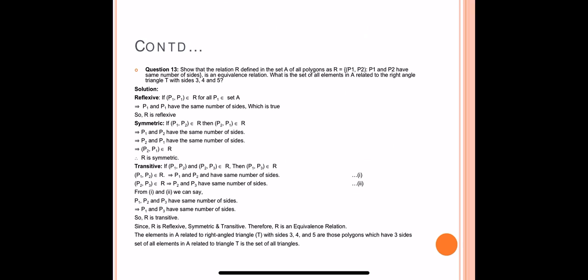For transitive: if (P1, P2) and (P2, P3) belong to R, then (P1, P3) belongs to R. (P1, P2) belongs to R means P1 and P2 have the same number of sides; (P2, P3) belongs to R means P2 and P3 have the same number of sides. From first and second, P1, P2, and P3 all have the same number of sides, which implies P1 and P3 have the same number of sides. So R is transitive.